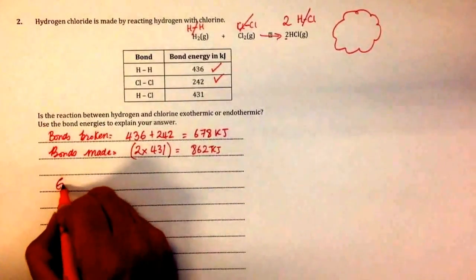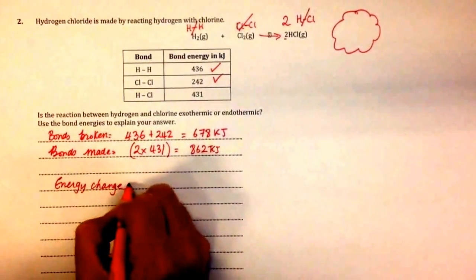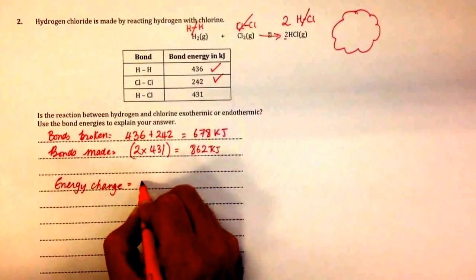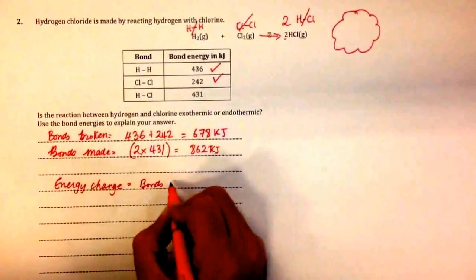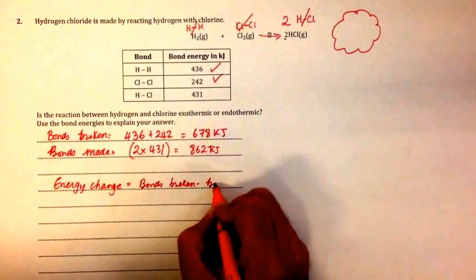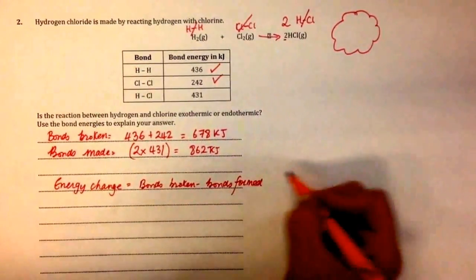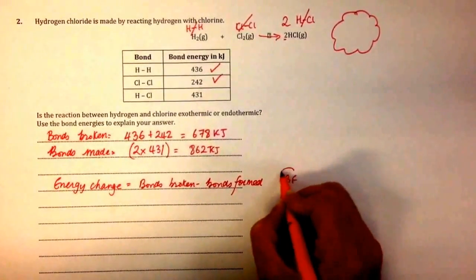Then work out the energy change of the reaction. It's the bonds formed taken away from the bonds broken - so bonds broken minus bonds formed. Remember, the way to remember that is BF, best friend.